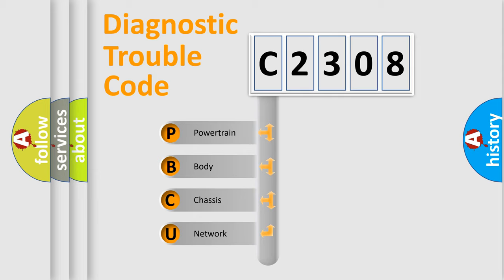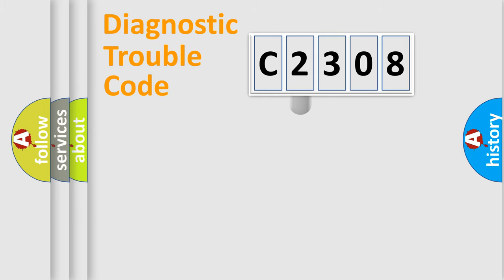We divide the electric system of automobile into four basic units: Powertrain, Body, Chassis, and Network. This distribution is defined in the first character code.